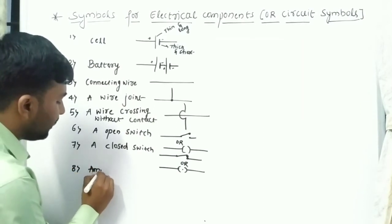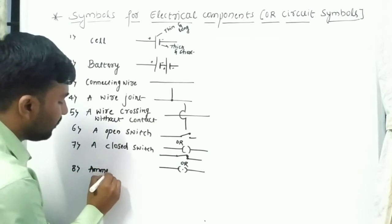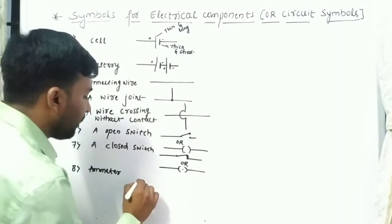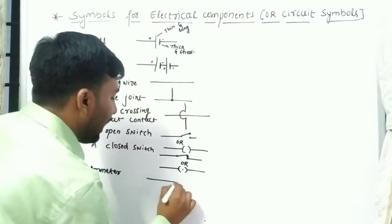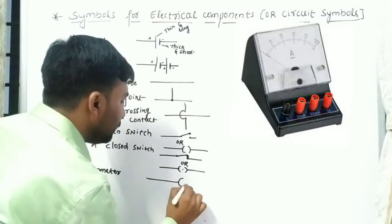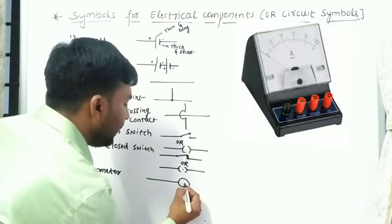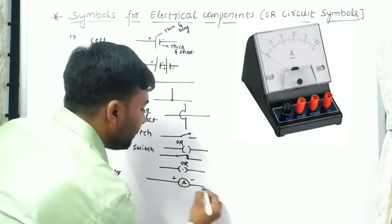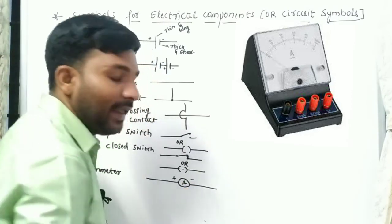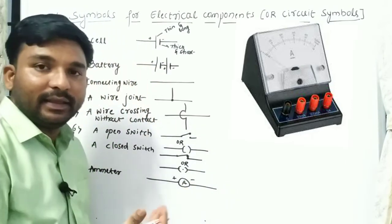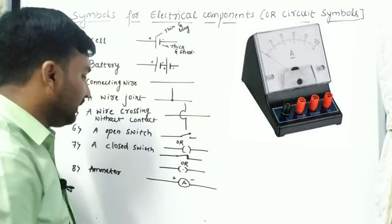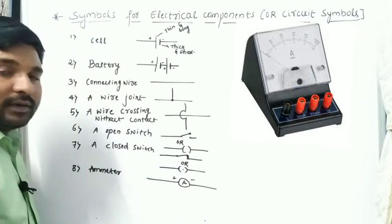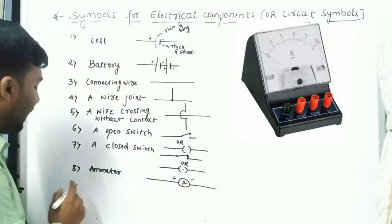Next is the ammeter. The ammeter is the device which measures the electric current in the circuit. The symbol for the ammeter is a circle with the letter A inside.